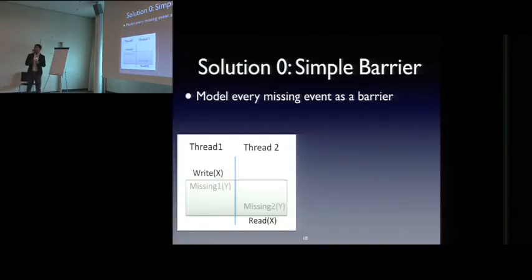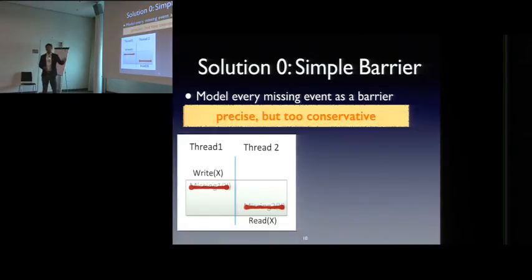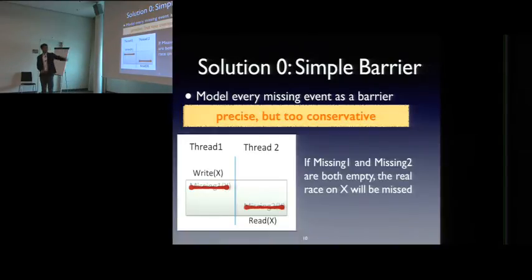So before I present our approach, let's start with a very intuitive idea. A simple barrier approach, which is model every missing event as a barrier. For example, here, we don't know what happened in missing one and missing two. Just model it as a barrier. So you won't detect any races between this and this. It is precise, but too conservative. Because what if missing one and missing two are both empty? Then the real race on x will be missed.